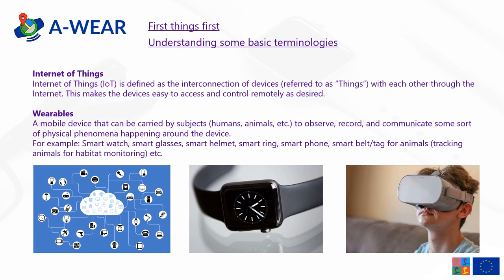Whereas a wearable is a mobile device that can be carried by subjects, which can be humans or animals, to observe, record and communicate some sort of physical phenomena happening around the device. For instance, a wearable can be a smartwatch, smart glasses, smart helmet, a smart ring or a smartphone.